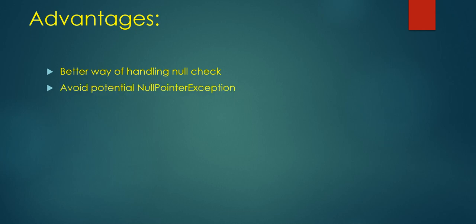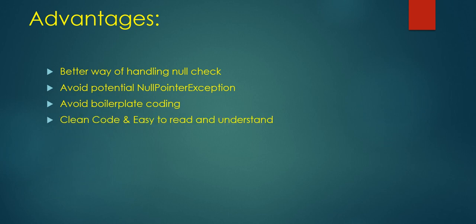Optional will also help us to avoid potential NullPointerException in our program and it will help us avoid boilerplate coding for null checks — like when you have an if condition to check for null, and if it is null then go to the else block and perform something, or give a default value. These sorts of checks are boilerplate. Using Optional, the null check code will look cleaner and also be easy to read and understand. Let's get into an example and see how we can use Optional in our program.